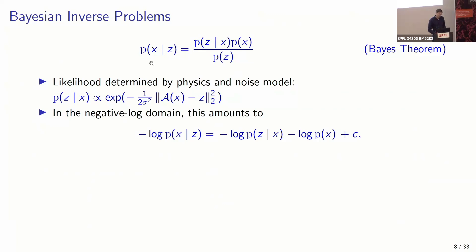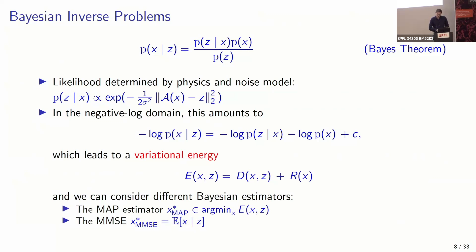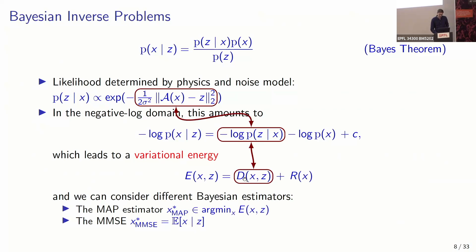Since probabilities are usually tiny numbers, it makes sense to apply the negative log to Bayes' theorem. The negative log posterior equals the negative log likelihood plus the negative log prior plus the log partition function constant. This connects classical variational approaches to Bayesian inference: the data fidelity term is the negative log likelihood, and the regularization term is the negative log prior.